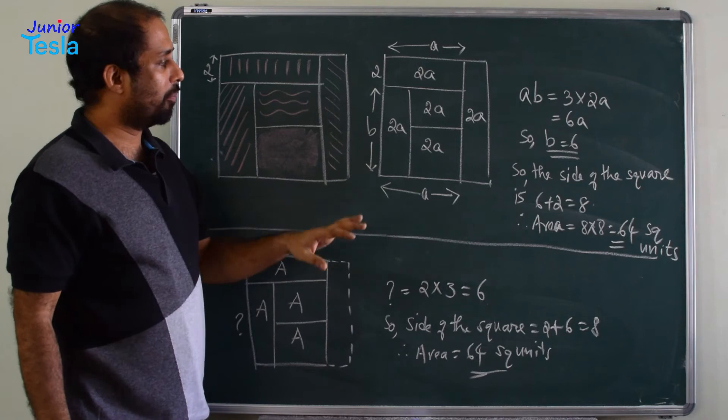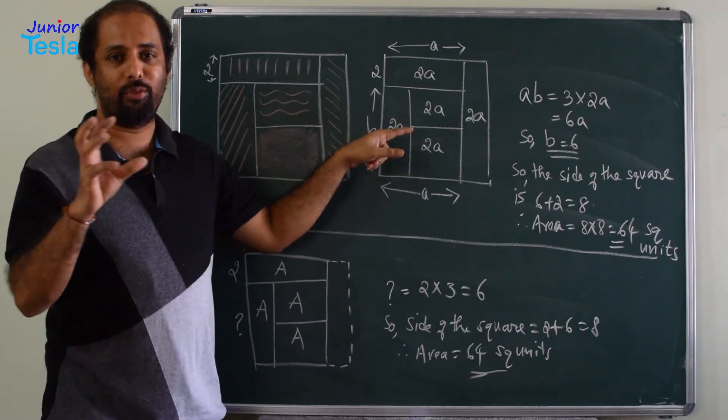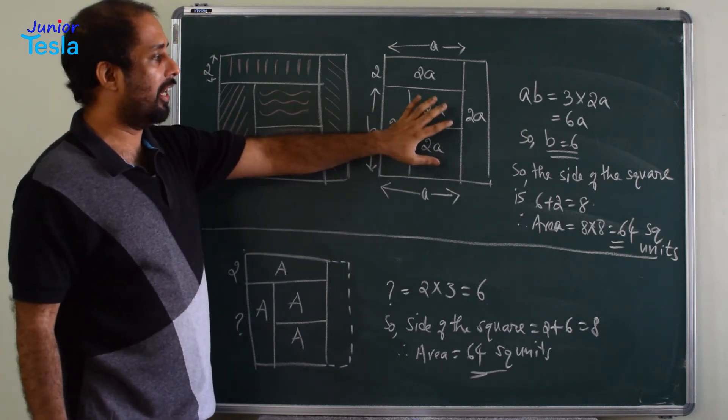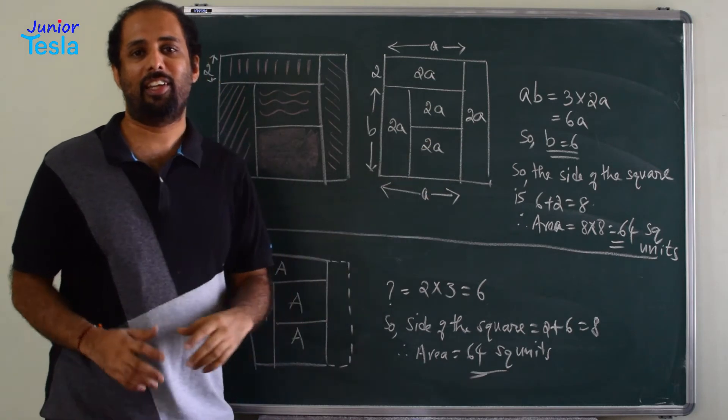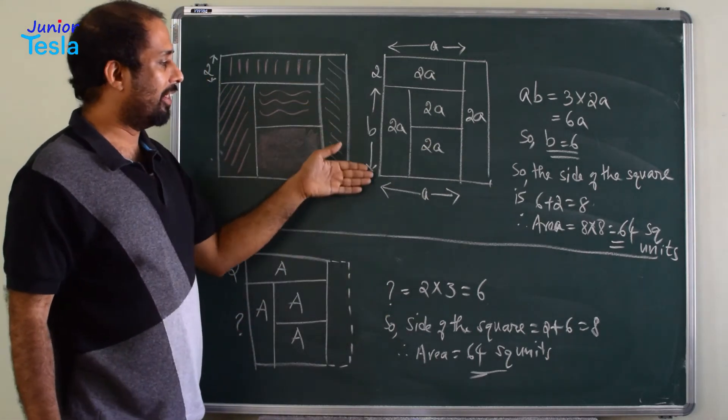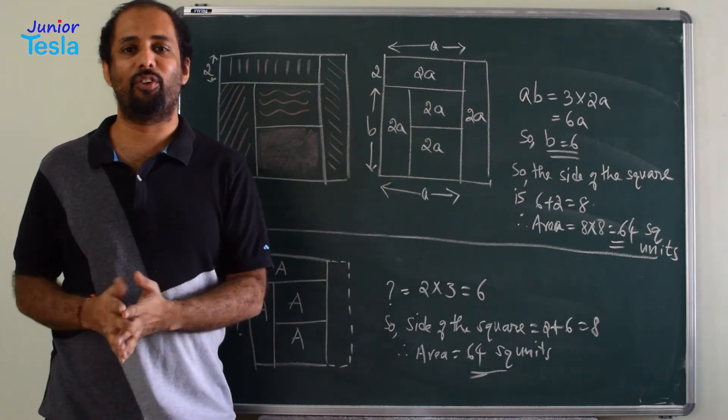But if you see the diagram properly, this region is having 3 parts, right? 2A plus 2A plus 2A, which is equal to 6A. So A into B is equal to 6A or B is equal to 6. So you got the value of B. Now you can tell what is the length, that is 8, and you can tell what is the area, that is 8 into 8, 64 square units.